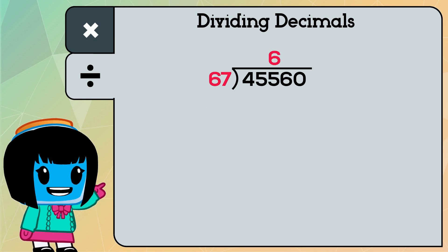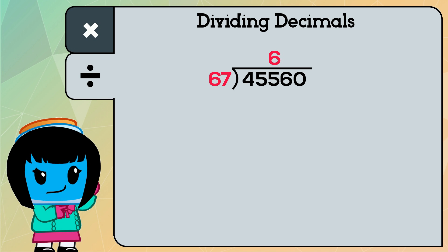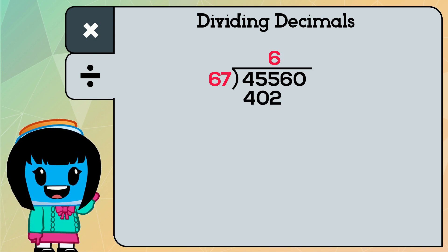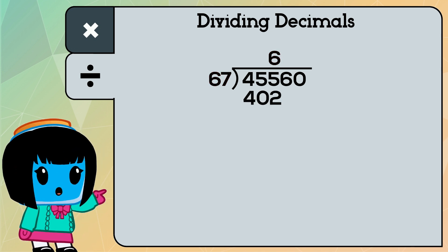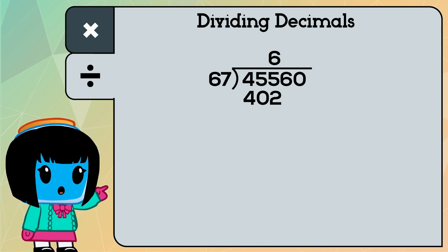67 times 6 is 402. 70 times 7 would give us a product too large. So the first digit in this quotient is 6.